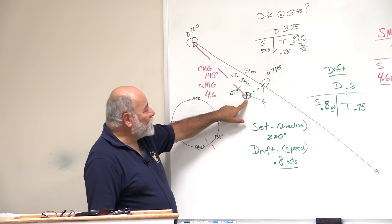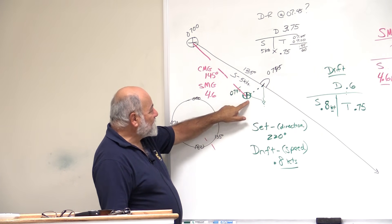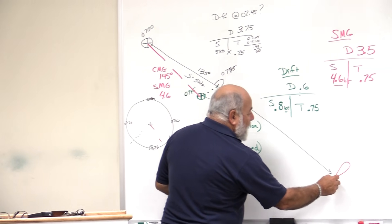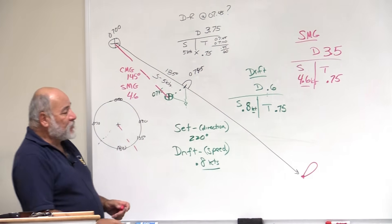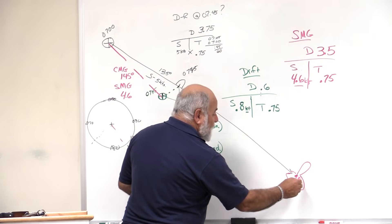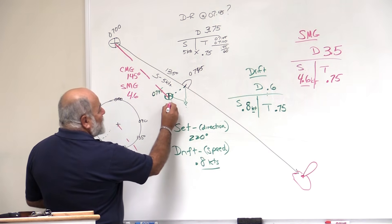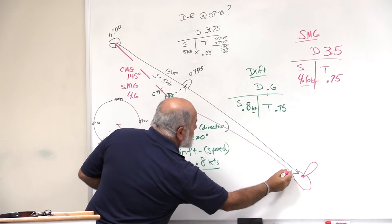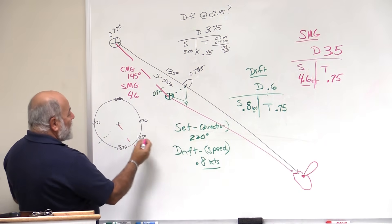At this point we would do a new DR. At this point now, let's suppose that our desire was to go to that lighthouse on this island over here, whatever it might be. That's where we're headed. So we would definitely, we would then, on our chart, we would figure out a new course, whatever it might be.